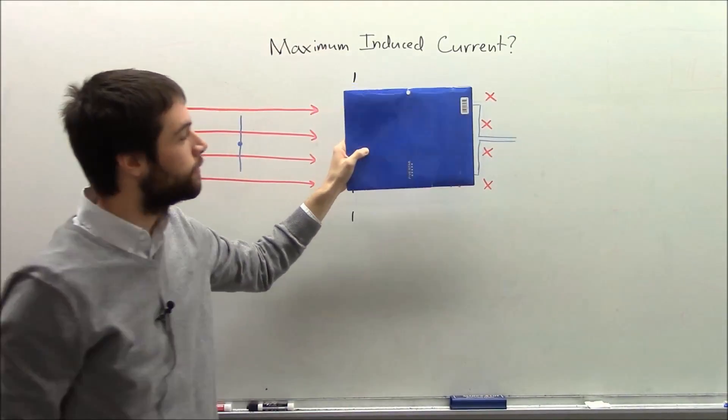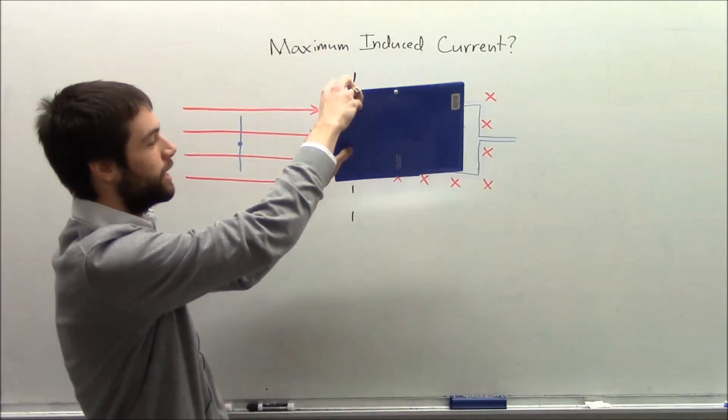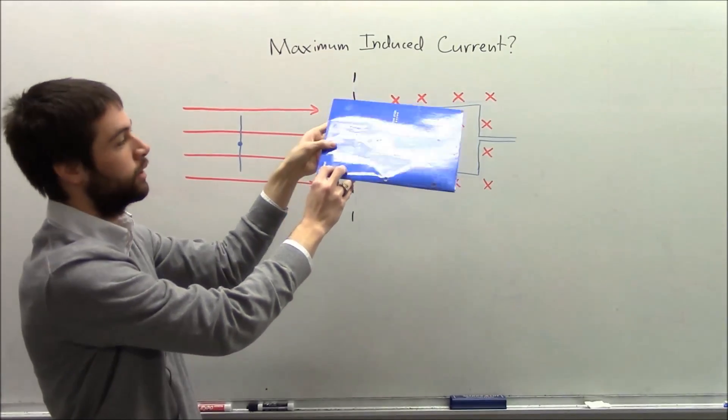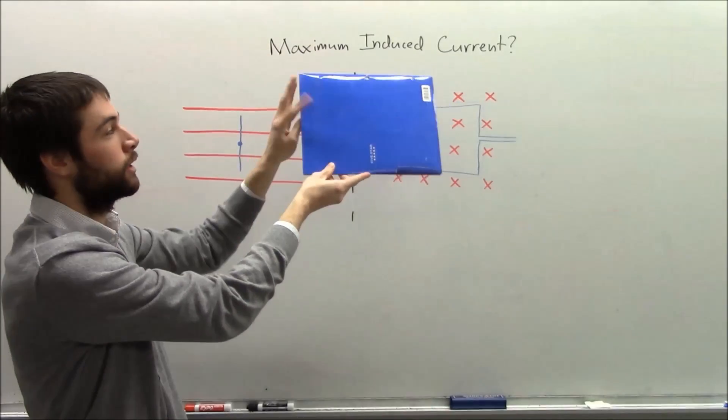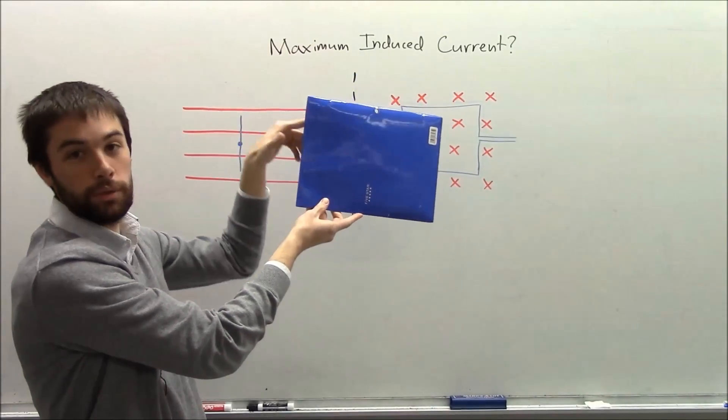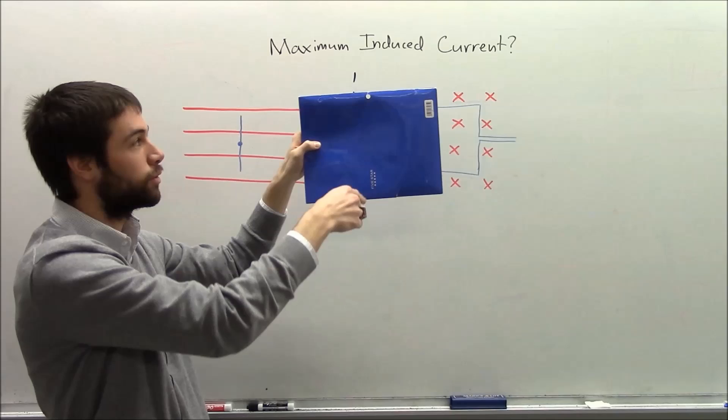So we have this loop, here's our blue loop with the wire coming out like that, and we want to know: if the loop spins at some constant rate, at what point in the loop's spinning is the maximum induced current?